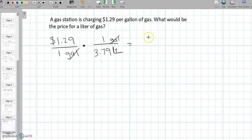So we have $1.29 per 3.79 liters. But it is asking us for how much for 1 liter of gas, so all we have to do is divide this out. So $1.29 divided by 3.79, and that would give us $0.34 per liter. So it would just be 34 cents per liter.